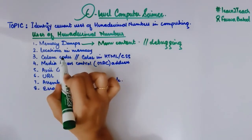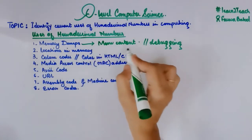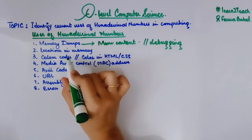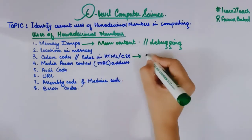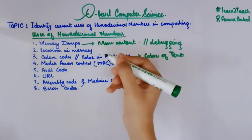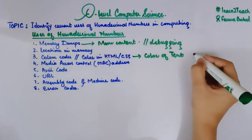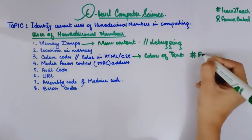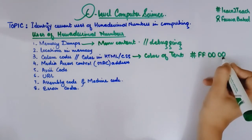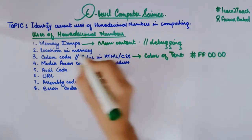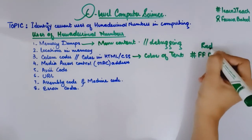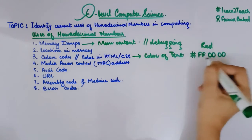The third use is color codes. These are important. In HTML or CSS, which is a markup language, we use color codes to represent the colors of text. For example, if I want to display text in red color, the color code for red would be hash FF0000. This is basically three pairs of hexadecimal numbers that are used to represent a color code.